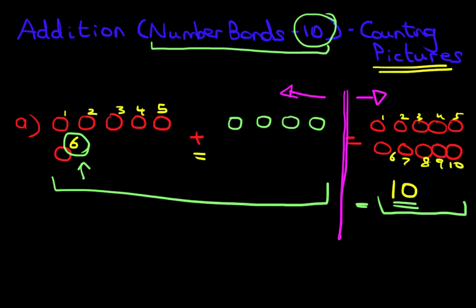So how many did we add to the red circles to make 10? Well let's count the green circles. We added one, two, three, four. The answer is four. We added four to six to make 10.